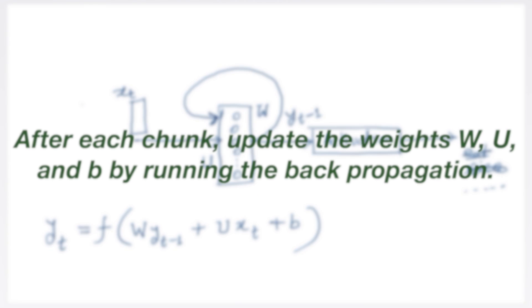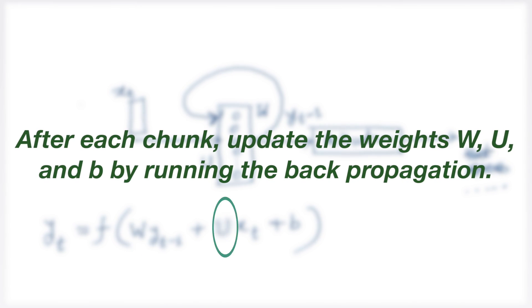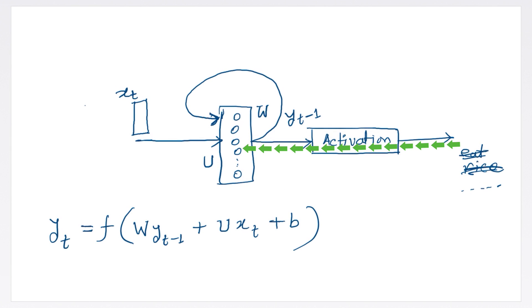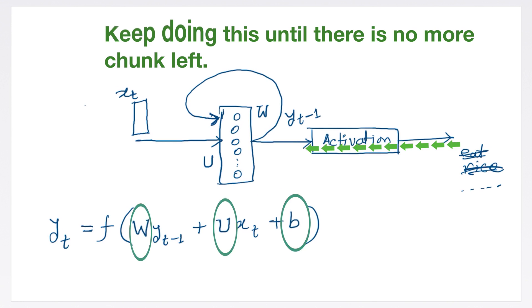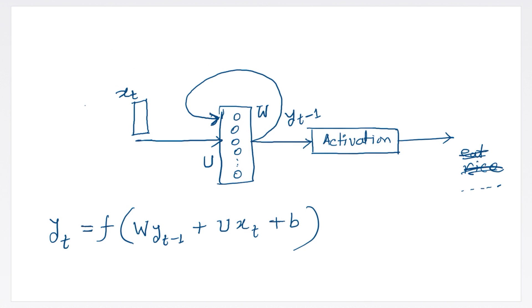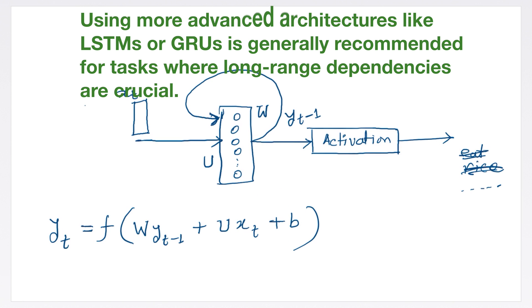That is, after each chunk, update the weights W, U and B by running the backpropagation. For the next chunk, use these updated W, U and B as initialization. Keep doing this until there is no more chunk left. This chunking approach makes the RNN more manageable. However, this approach might cause the loss of long-term dependencies that span beyond the length of the truncated sequences. Using more advanced architectures like LSTMs or GRUs is generally recommended for tasks where long-range dependencies are crucial.